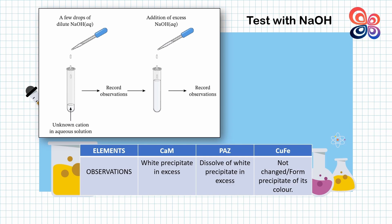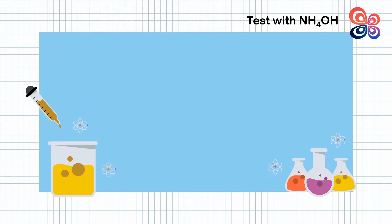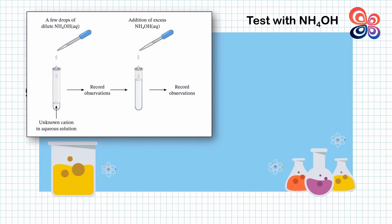Second test is ammonium hydroxide test. A few drops of ammonium hydroxide is dropped into the test tube containing unknown cation in solution. Record the changes that happen to the solution. Next, excess ammonium hydroxide is dropped into the test tube and record the observations.